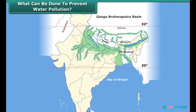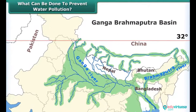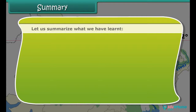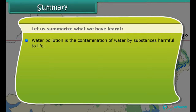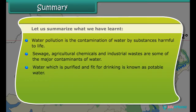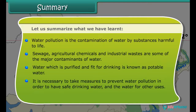The government also took measures to prevent water pollution of rivers. For example, the Ganga Action Plan was launched in 1985, aimed to reduce the pollution levels in the river. In summary: water pollution is the contamination of water by substances harmful to life. Agricultural chemicals and industrial wastes are some of the major contaminants. Water purified and fit for drinking is known as potable water. It is necessary to take measures to prevent water pollution in order to have safe drinking water.